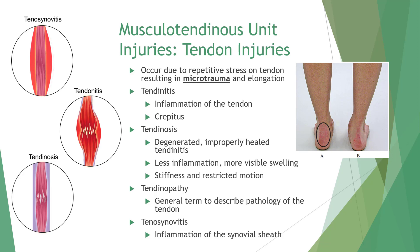Treatment may require the substitution of activity to maintain fitness without stressing the injured structure. Without proper healing, tendonitis may begin to degenerate and result in tendinosis. There is less inflammation and more visible swollen tissue with stiffness and restricted range of motion. A tender lump may appear close to the tendon, more common in middle or older age. Treatment involves stretching and strengthening.